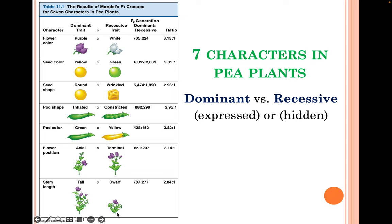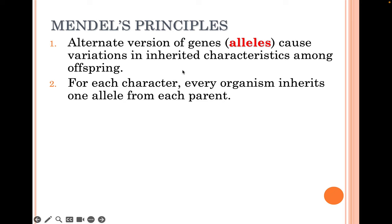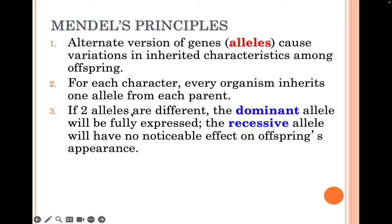What does it mean to be dominant? Alternative versions of genes are called alleles, and they cause variation in inherited characters among offspring. In humans, we get one chromosome from mom and one from dad, each carrying an allele for whatever gene we're interested in — so each of us has two alleles for every gene. If the two alleles are different, the dominant allele will be the one that's expressed — what we can see. The recessive allele will have no noticeable effect on the offspring's appearance; it'll be hidden.